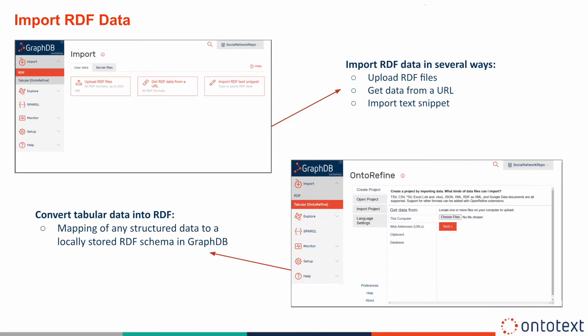You can convert tabular data into RDF and import it into a GraphDB repository using the OnToRefine data transformation tool. The implementation exposes a virtual SPARQL endpoint which translates the queries to SQL using a declarative mapping.